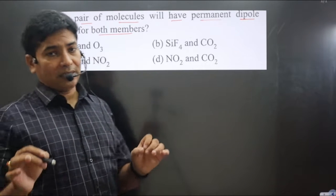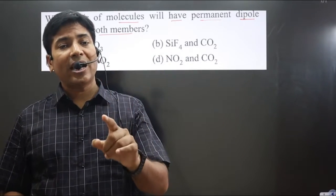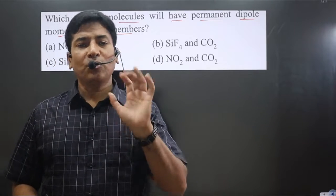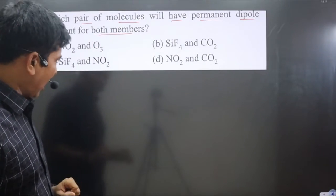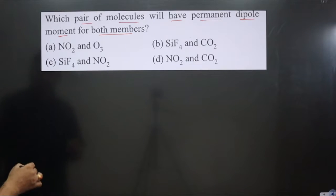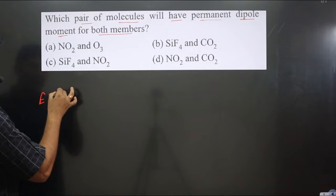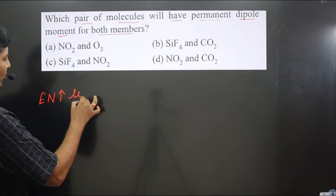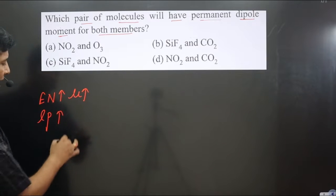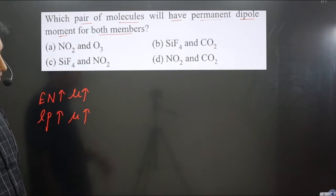Always keep in mind: if the central element in a molecule has a lone pair, its dipole moment will never be zero — it will always be polar by nature. Also, higher the electronegativity of the central element, higher is the dipole moment. Higher the number of lone pairs on the central element, higher is the dipole moment, and higher the dipole moment, higher is the polarity.